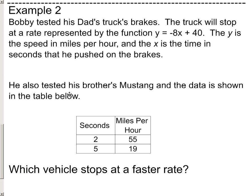Now, the second thing that he's doing is he's also tested his brother's Mustang, you know, testing the brakes to see how fast it will stop. And the data is shown below in a table. And it refers to the same thing as this equation. If we're referring to two different functions, they really need to be representing the same type of data. So the seconds would be how many seconds he stepped on the brakes of the Mustang, and this is the actual speed that the Mustang's doing. So after two seconds of stepping on the brakes, the Mustang's doing 55 miles per hour. And after five seconds, it's down to about 19 miles per hour. So which vehicle stops at a faster rate? That's all that we want to know.